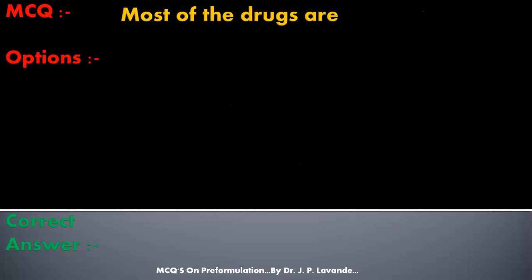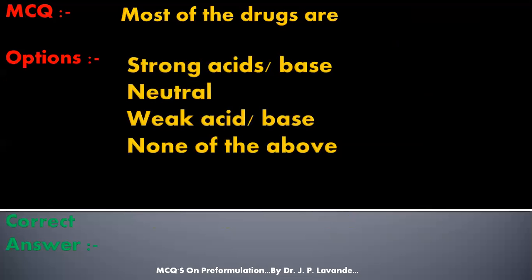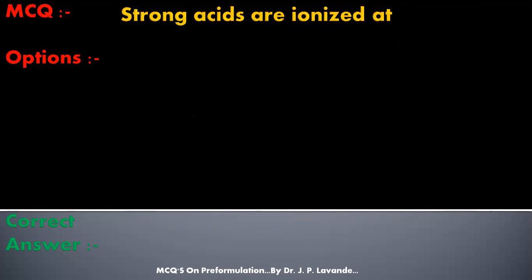Next question: most drugs are — options are: strong acids; strong bases; neutral; or weak acids and bases. The correct answer is weak acid and base — most drugs are weak acids or bases.